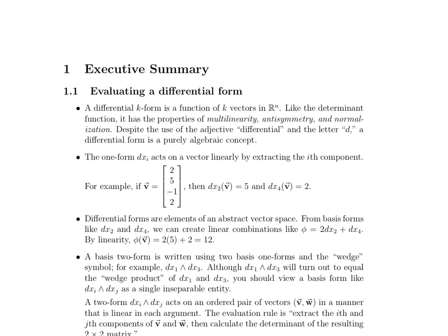The first thing I need to do is introduce you to what's called a differential form. There are different sized differential forms: one-forms, two-forms, three-forms, any number. A differential k-form, whatever k the number is, is a function of k vectors in R^n. It acts on k vectors and spits out a scalar. Like the determinant function, it has the properties of multilinearity, antisymmetry, and normalization.